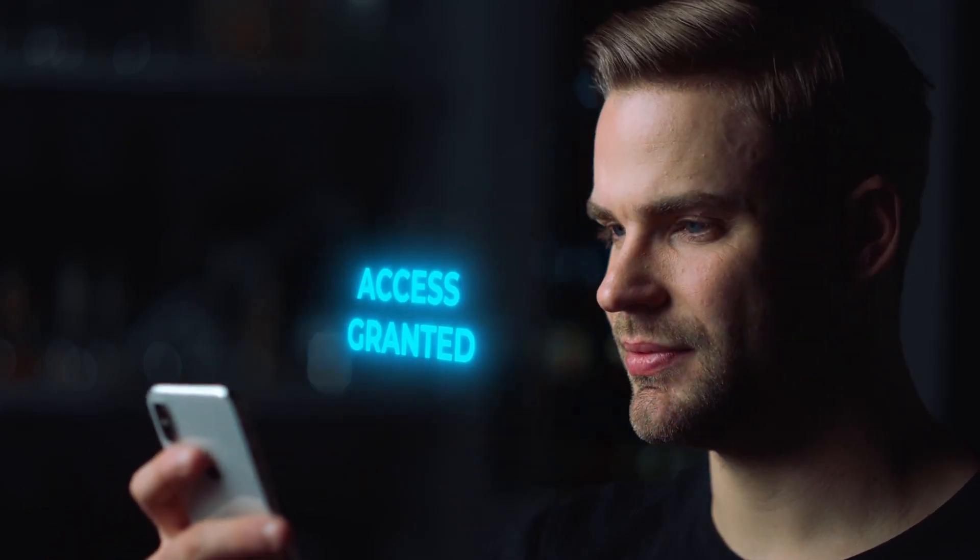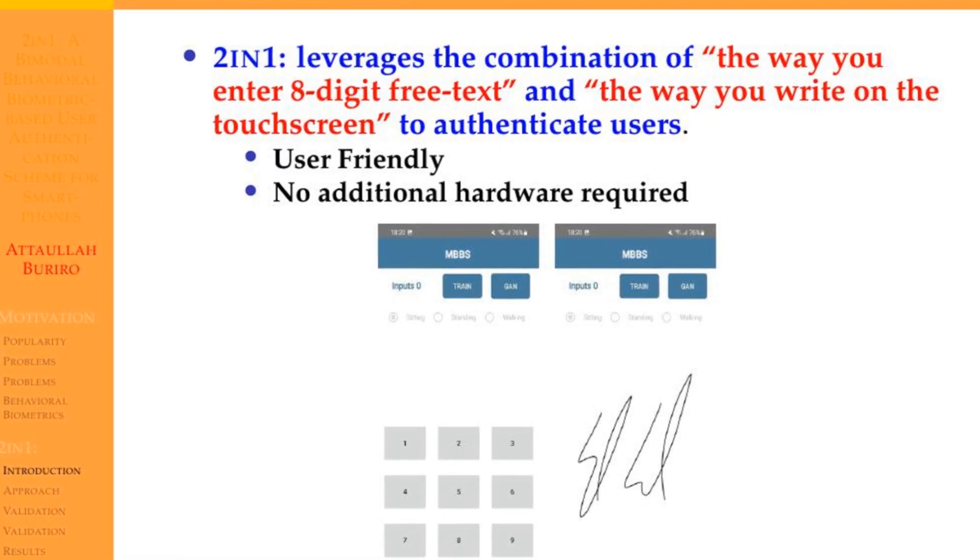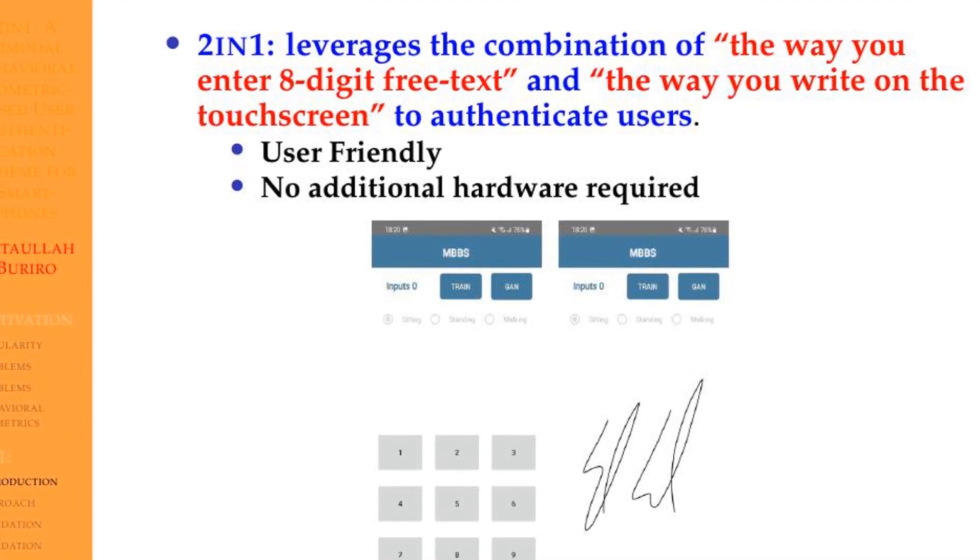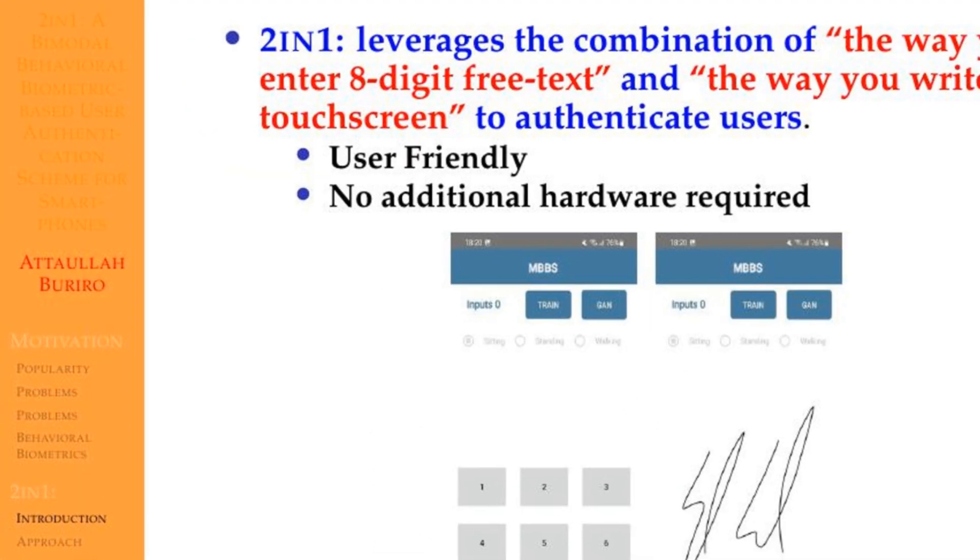So, what is 2-in-1? 2-in-1 leverages the combination of the way you enter eight-digit free text and the way you write on the touchscreen to authenticate users. It is user-friendly and requires no additional hardware. The choice of low-level events, such as touch typing and signing on the screen, as biometric modalities make 2-in-1 easier to implement and adapt.